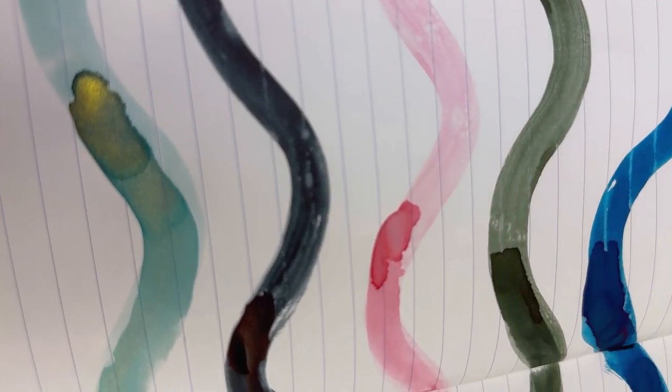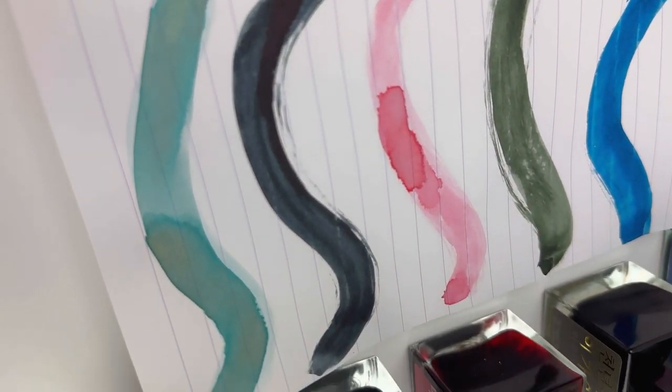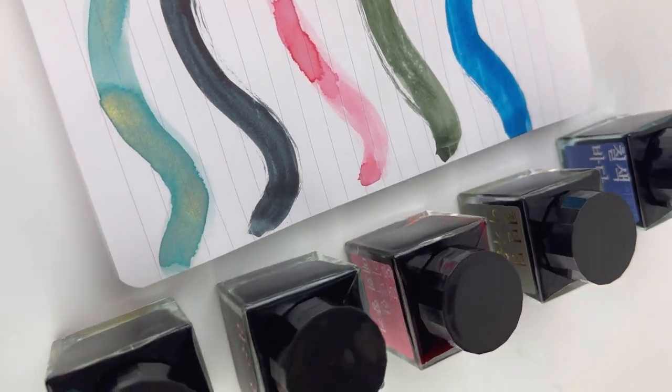Here's a look at all five of the inks in the collection once the swatches were dry. You can see the glistening aspect of those glisteners and you can also see those other inks have some good shading and a little bit of sheen.